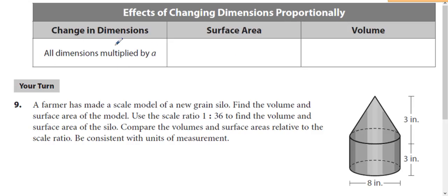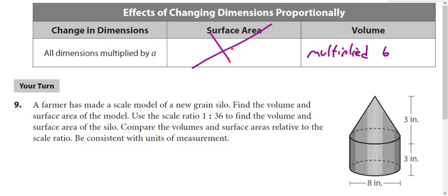If the dimensions are multiplied by A, the volume is going to be multiplied by A cubed. It's three dimensions, so it happens three times, which is why it's the same power — just like area has two dimensions so it's squared.